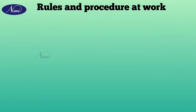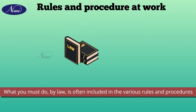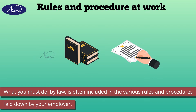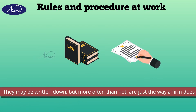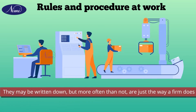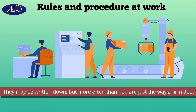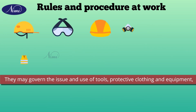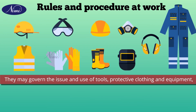Let us see the rules and procedures at work. What you must do by law is often included in the various rules and procedures laid down by your employer. They may be written down, but more often than not are just the way a firm does things. You will learn these from other workers as you do your job. They may govern the issue and use of tools, protective clothing and equipment.